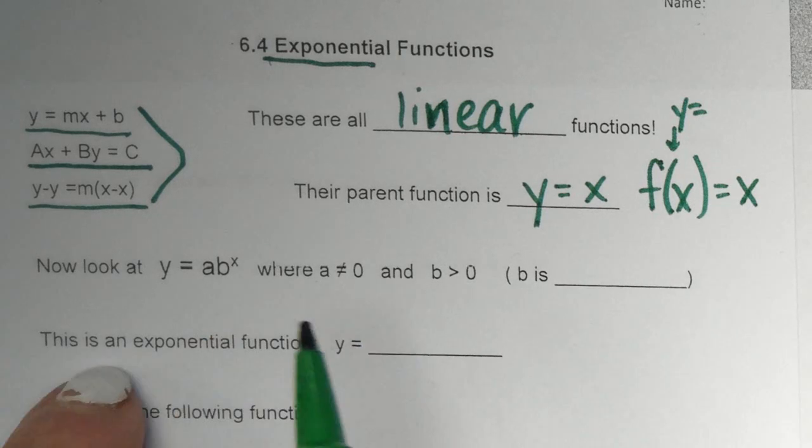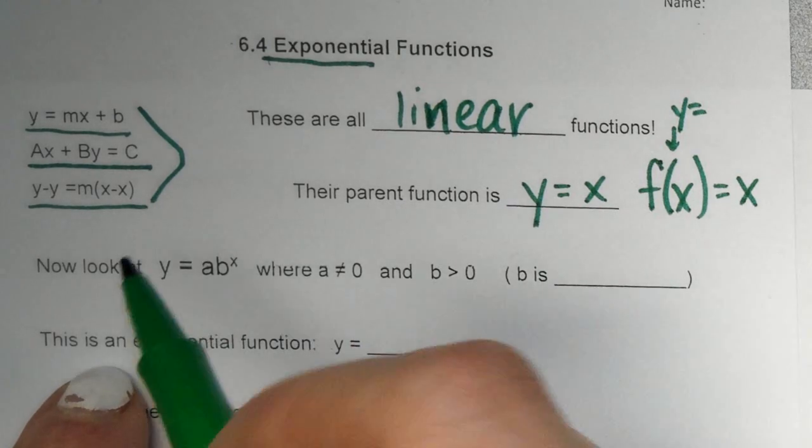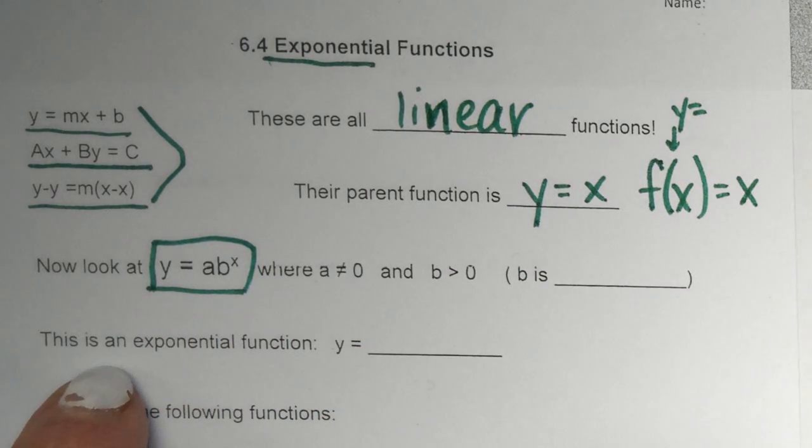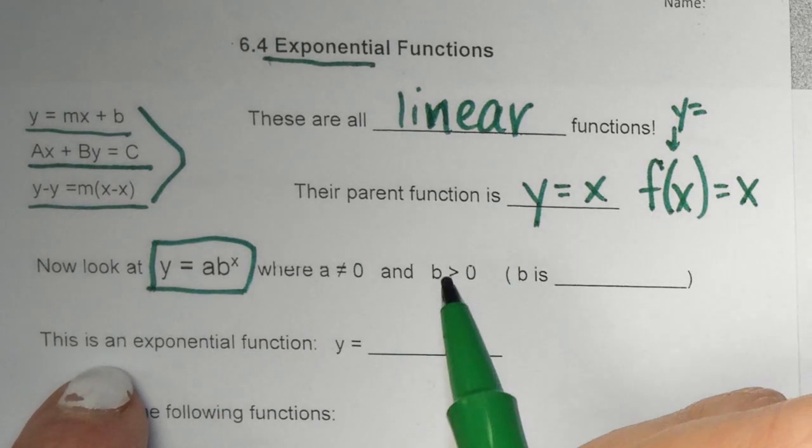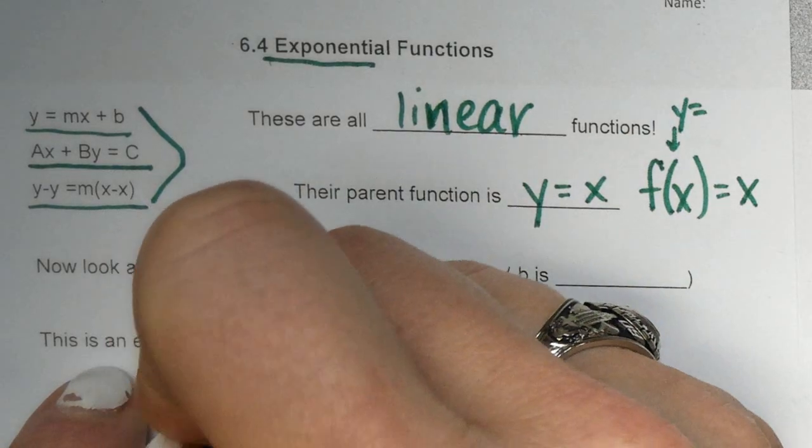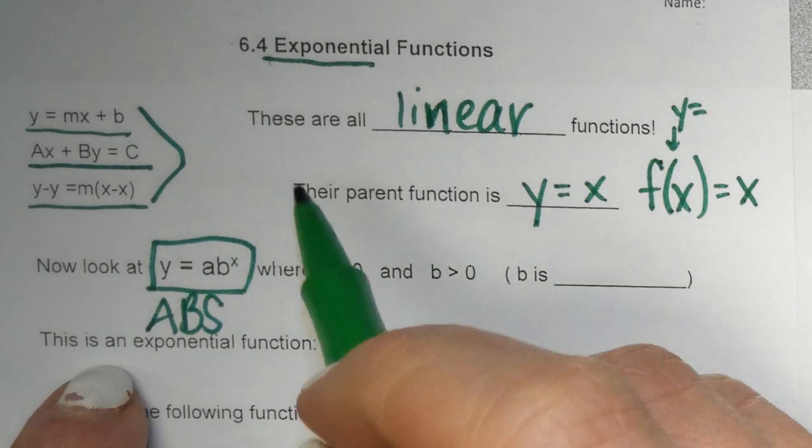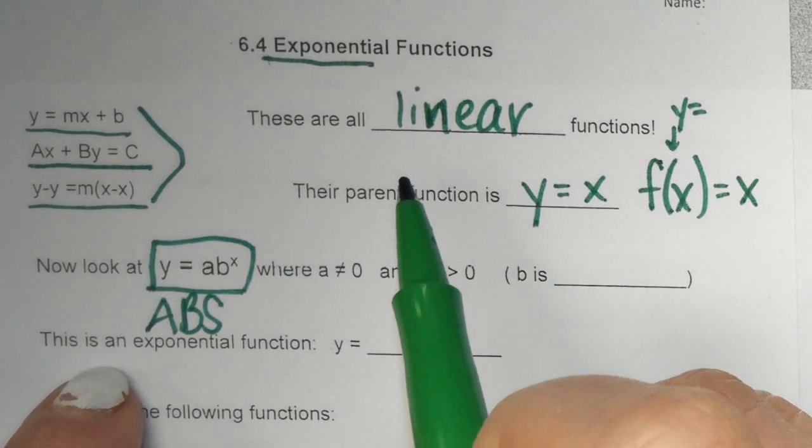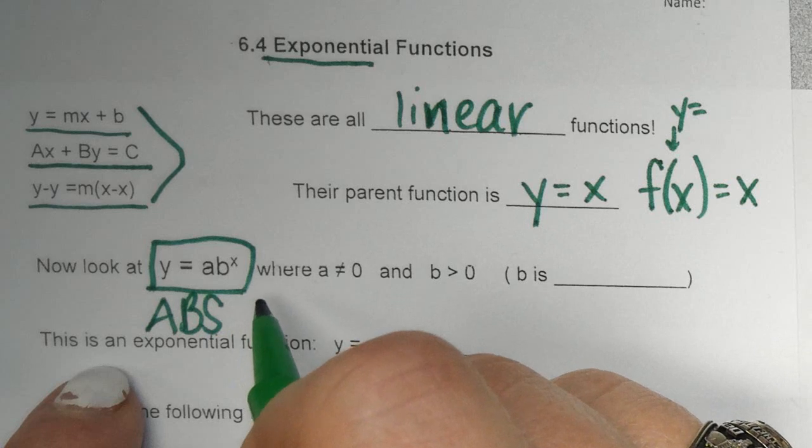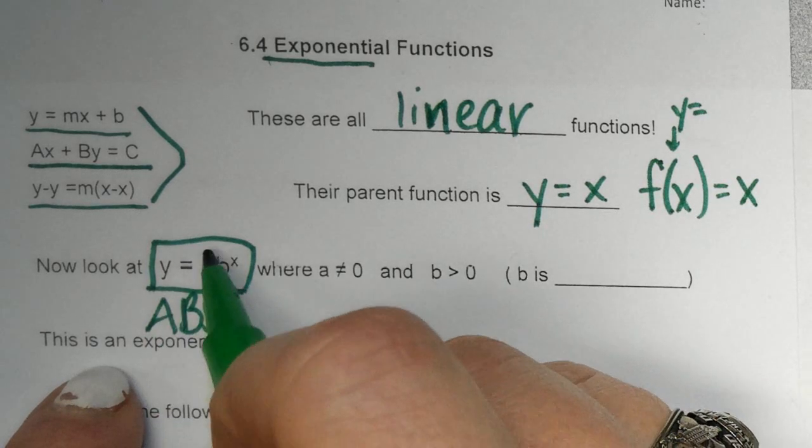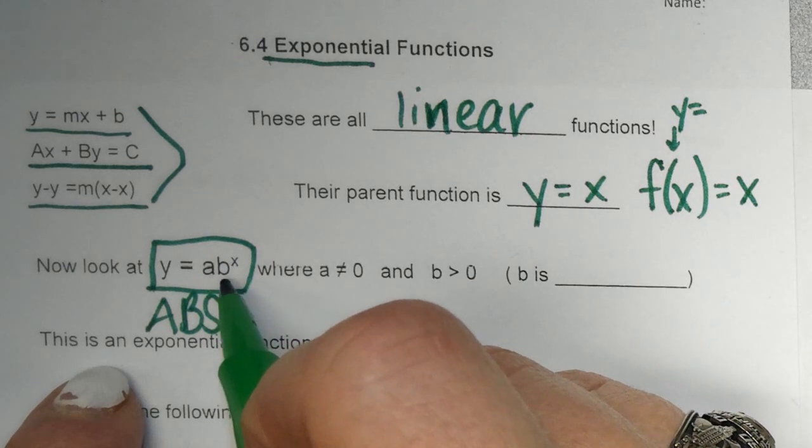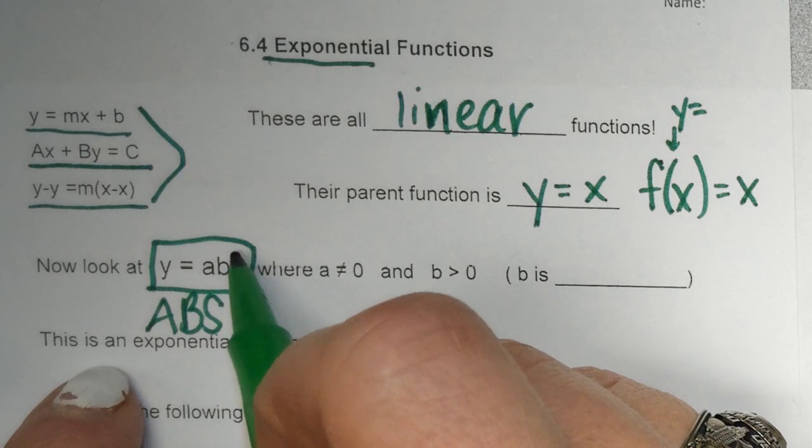Now, look at, we're going to look at a new formula right here. A new equation. Y equals ab^x. So I want you to think of abs. Abs. We're going to get an ab workout today. We're doing some abs. Ab to the X power. And all that's telling you is we're going to be looking at things today where we have a number, which is the a, times the base of an exponent, which is b, base, to an exponent, which is the X.